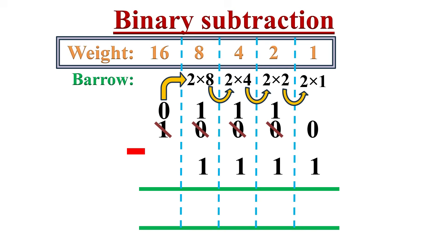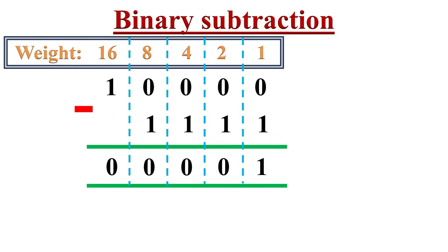This is how we can borrow from the last column to the first column. Now in the rightmost column, it is 2 times 1 minus 1, which equals 1. In the 2's column, it is 1 minus 1, which equals 0. In the 4's column also, it is 1 minus 1, which equals 0. In the 8's column also, 1 minus 1 equals 0. In the last column, it is 0 minus 0, which equals 0. After subtraction, we have 000001 as the answer.